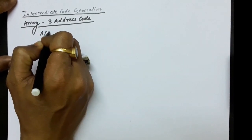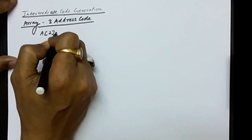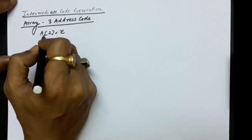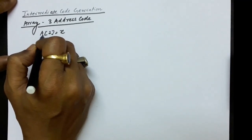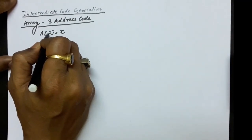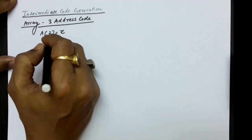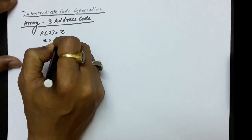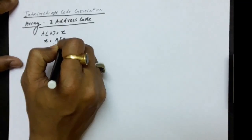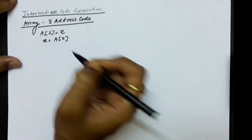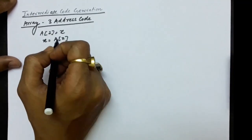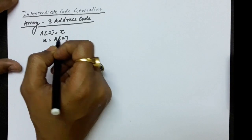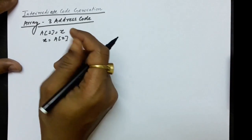It can be written as: a[2] = x, meaning we have an array a and at index two we are storing the value x. Or we can write it like x = a[z]. So this was actually the single dimension array form that we have been using.